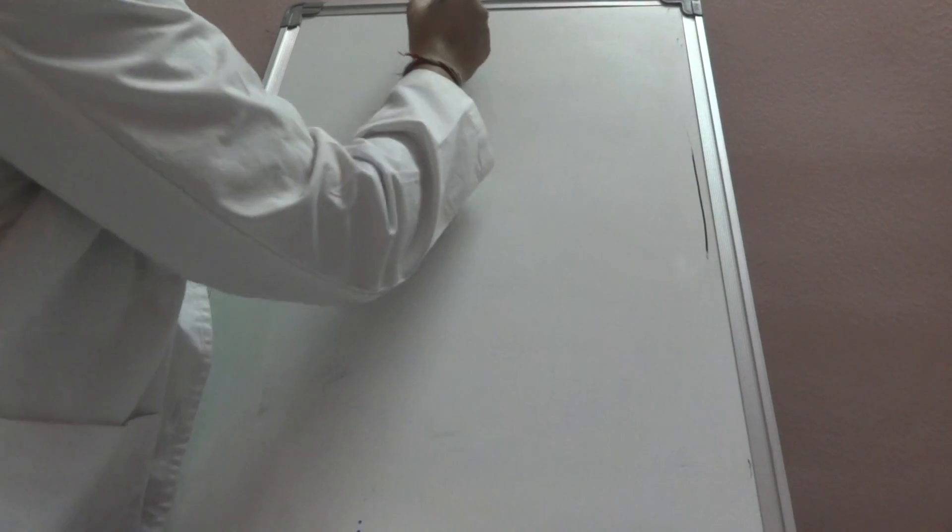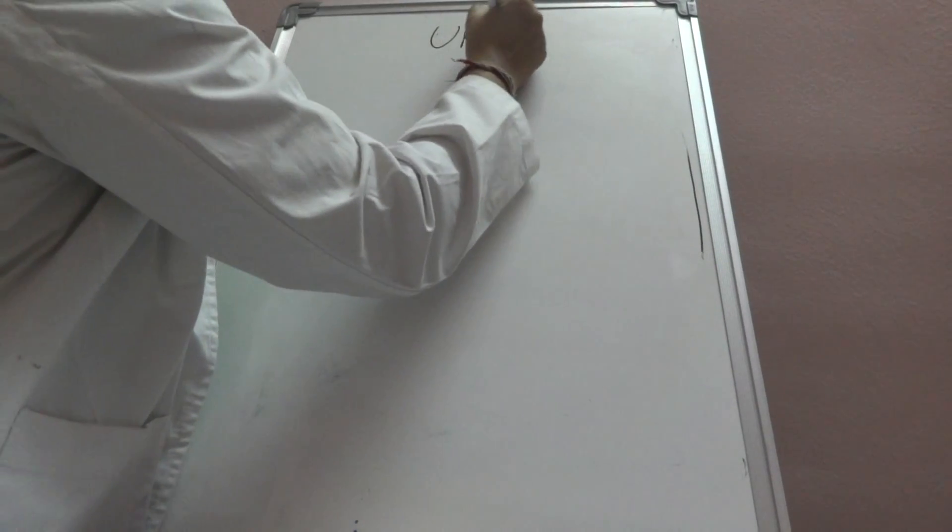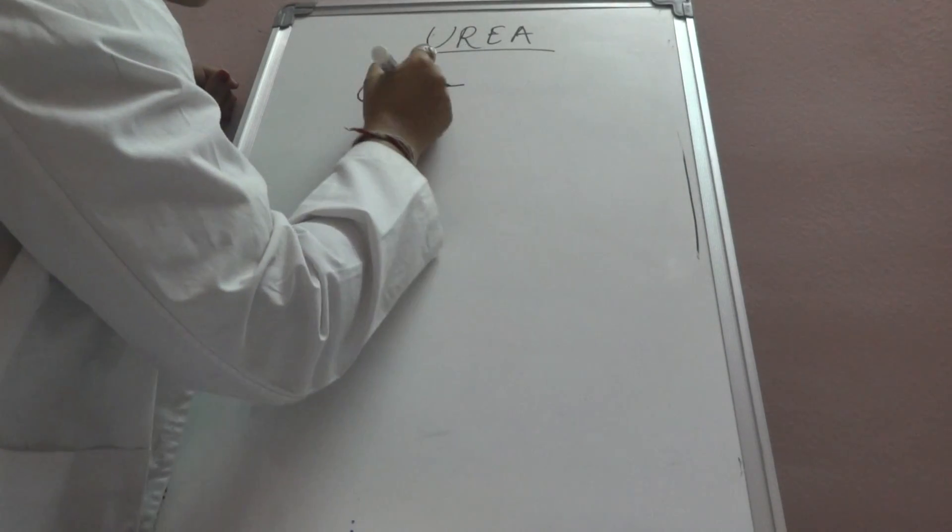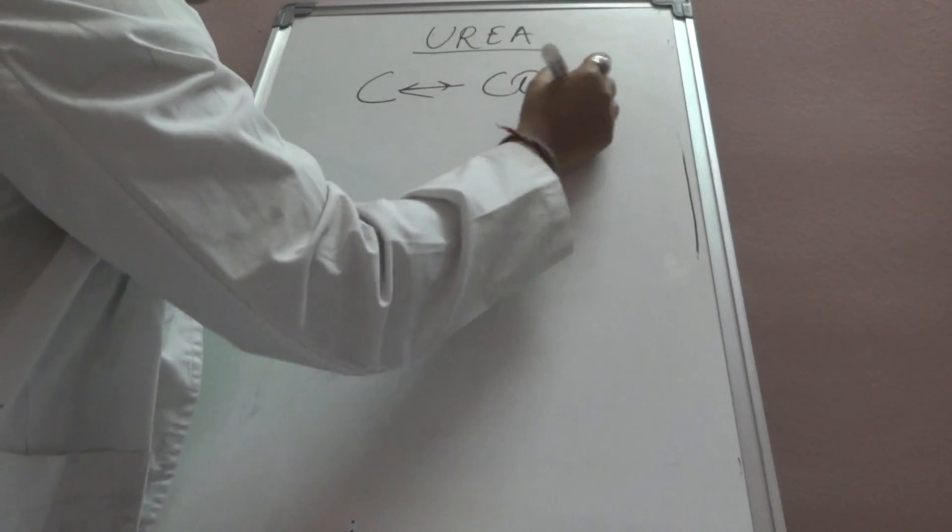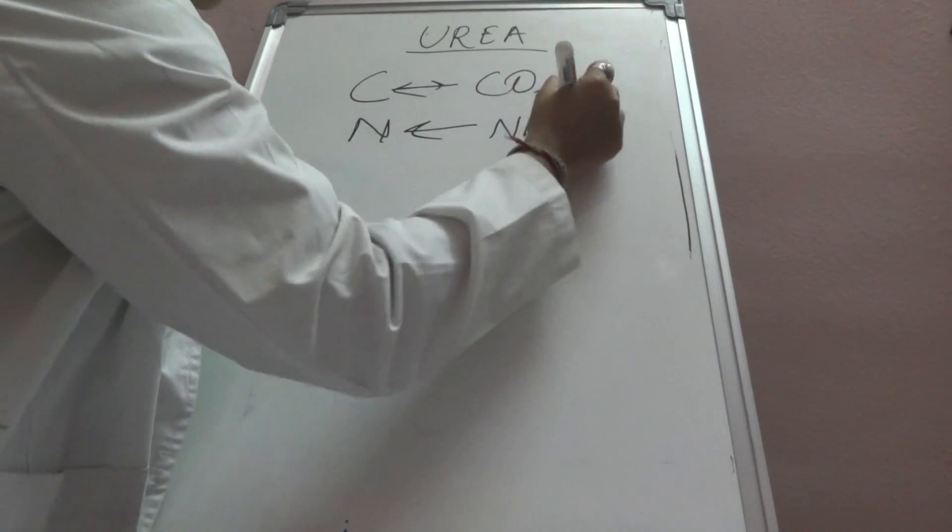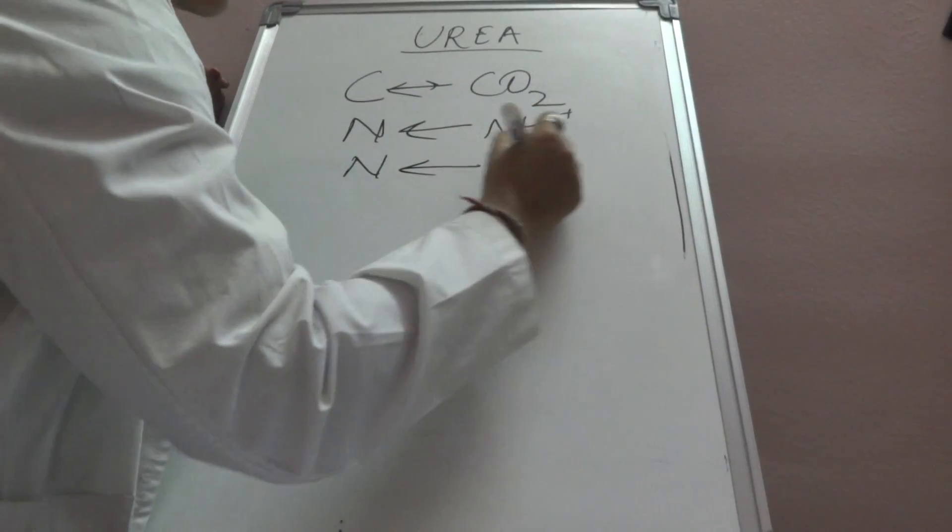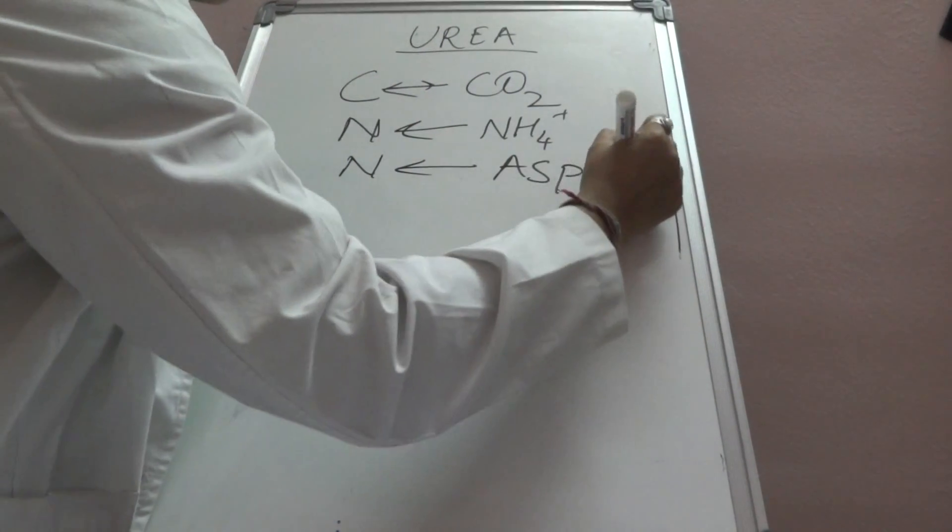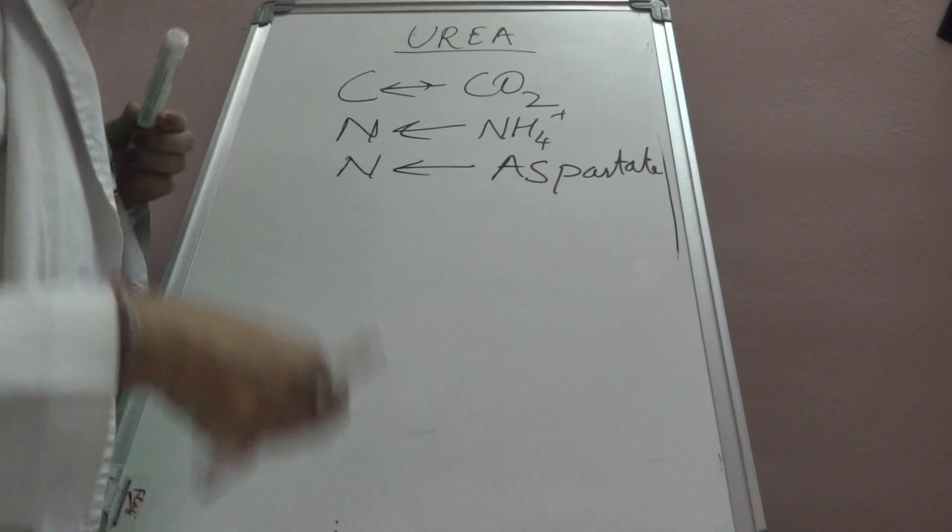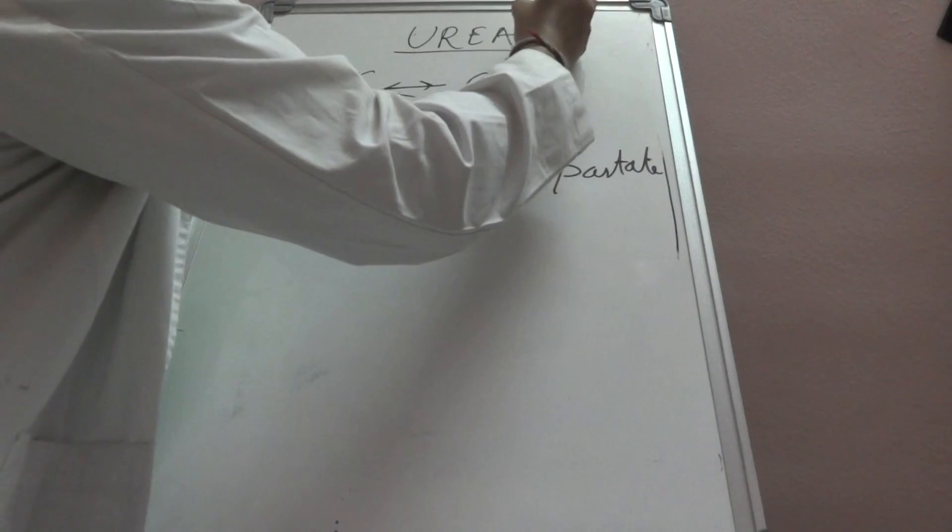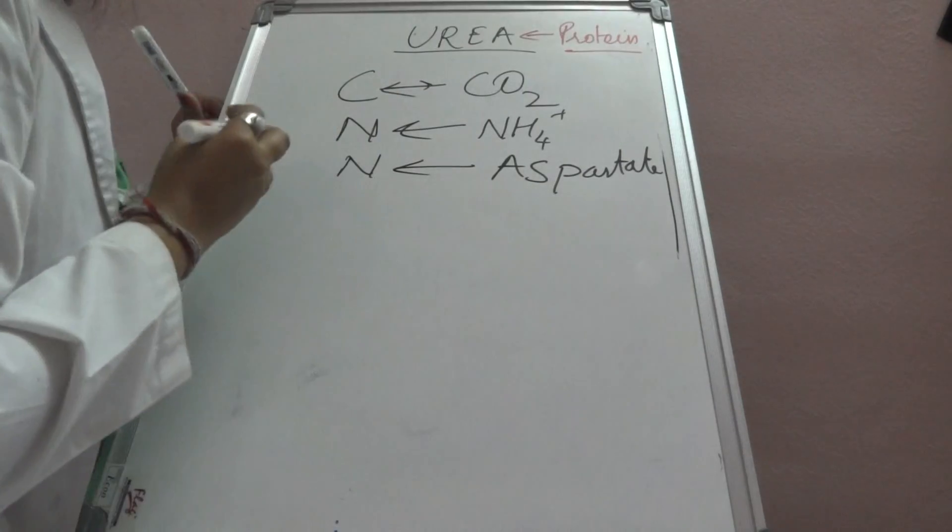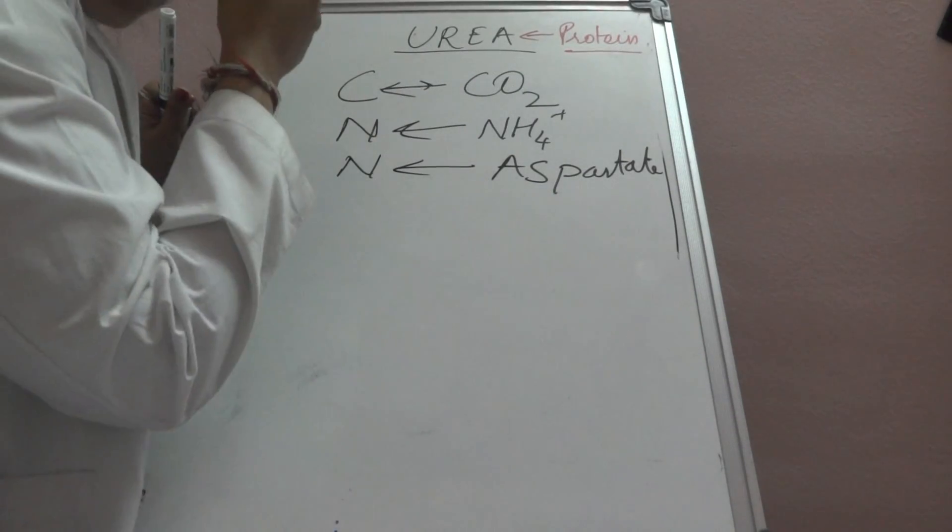Hi, today we discuss the urea cycle. Urea is a molecule which contains one carbon from carbon dioxide, one nitrogen from ammonium, and one more nitrogen from aspartate. Urea is the end product of protein catabolism. More protein intake leads to more urea production.